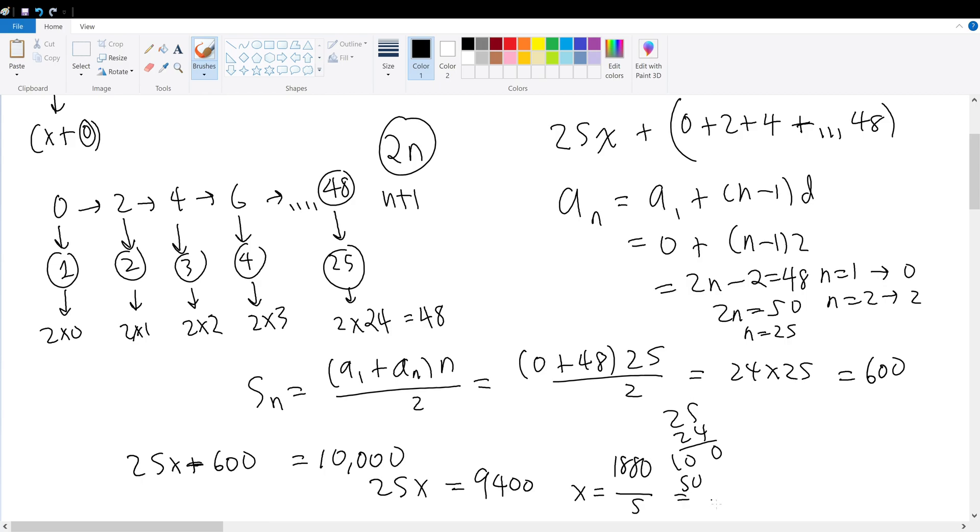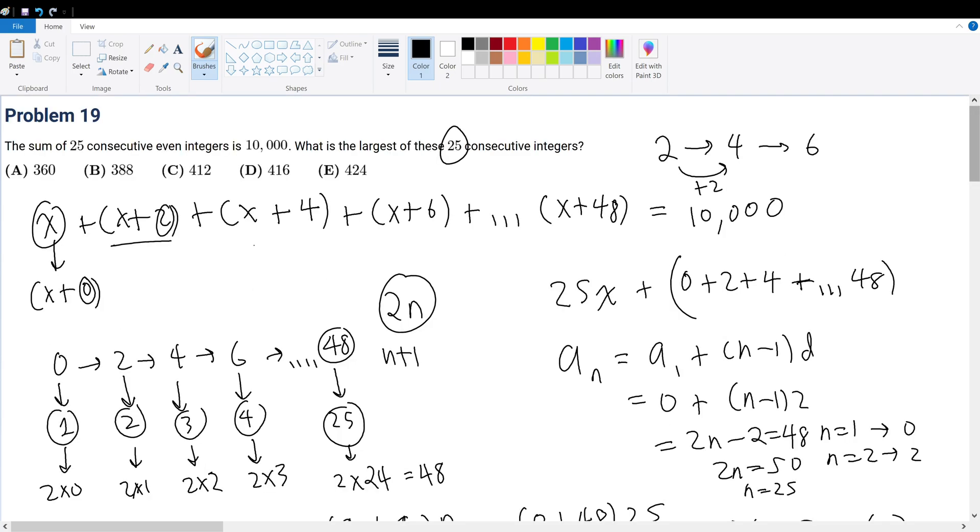So our answer will be 376, and what are we trying to solve for? What is the largest? Well, the largest is 376 plus 48, which is equal to 424. So your final answer will be choice E.